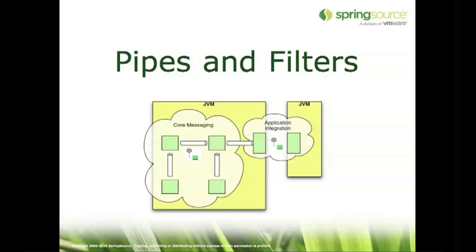Connecting between pipes, you have filters, which you can think of as the objects that actually produce and or consume the messages. If it's a one-way connection, then you might have something that's firing messages into a channel. And if it's between two channels, then it's probably receiving messages, transforming them in some way or invoking some service, and then returning the result to the outbound channel.